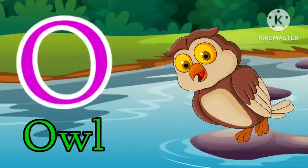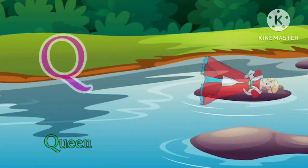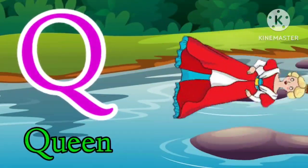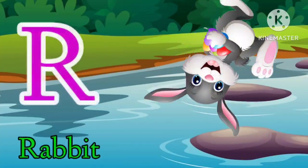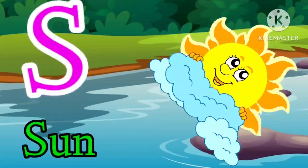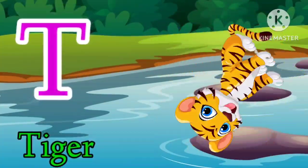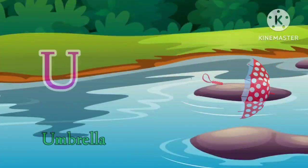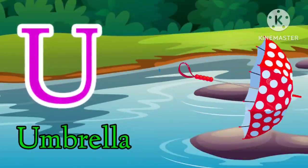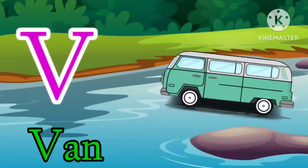O for owl, P for parrot, Q for queen, R for rabbit, S for sun, T for tiger, U for umbrella, V for van.